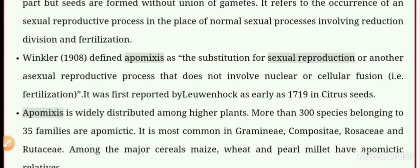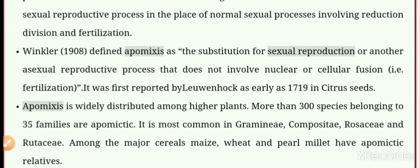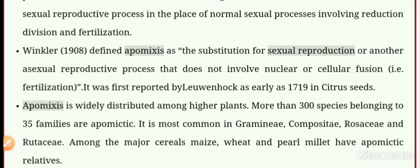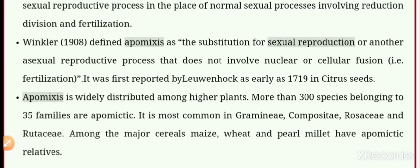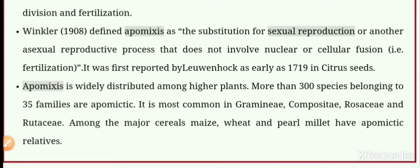The scientist Winkler defined Apomixis in 1908. It is the substitution for the sexual reproduction by another asexual reproductive process. It is a kind of asexual reproduction because seed forms without union of gametes. It does not involve nuclear or cellular fusion, meaning there is no fertilization. In simple words, when seed formation occurs without fertilization, without union of gametes, we call it Apomixis.